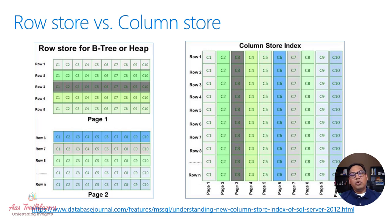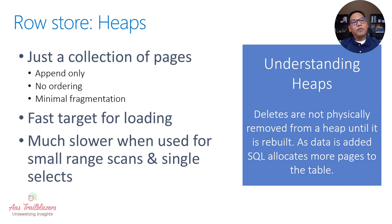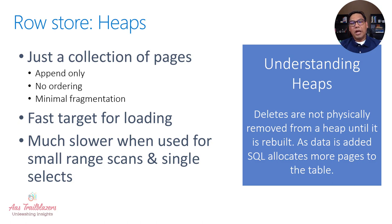Before we deep dive into column store index, let's quickly look at row store index options available with dedicated SQL pool. The very first option is creating a table as a heap. A heap is a table without a cluster index, so there is no permanent logical order for storing the rows. Data is stored in the heap without specifying an order, and hence the data order cannot be predicted in advance.